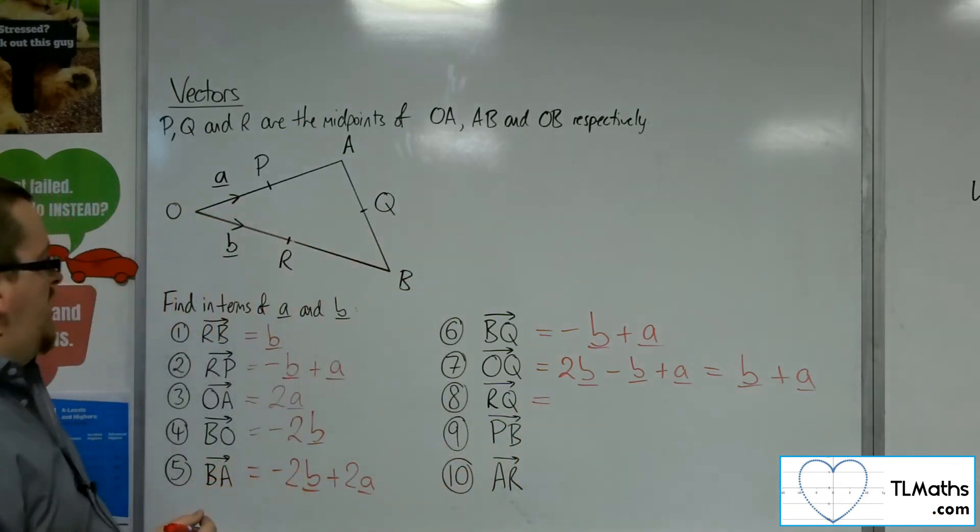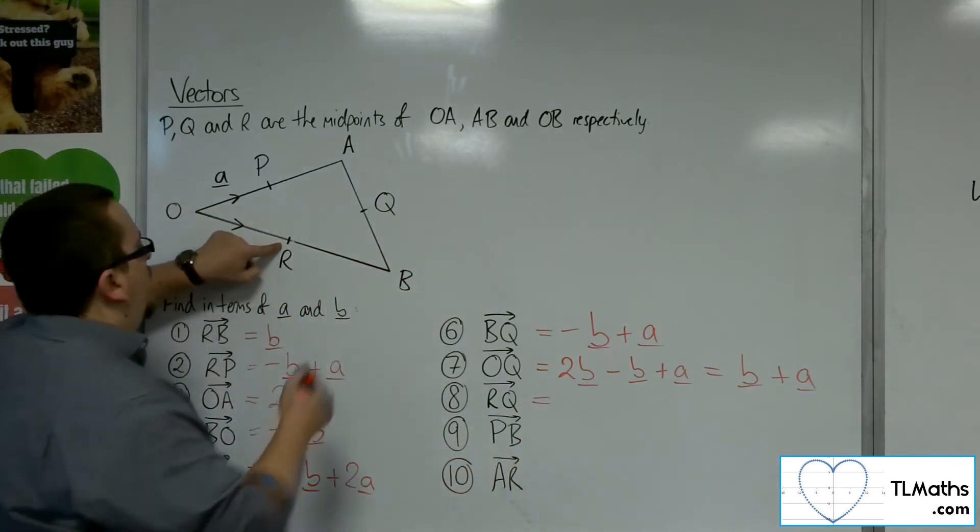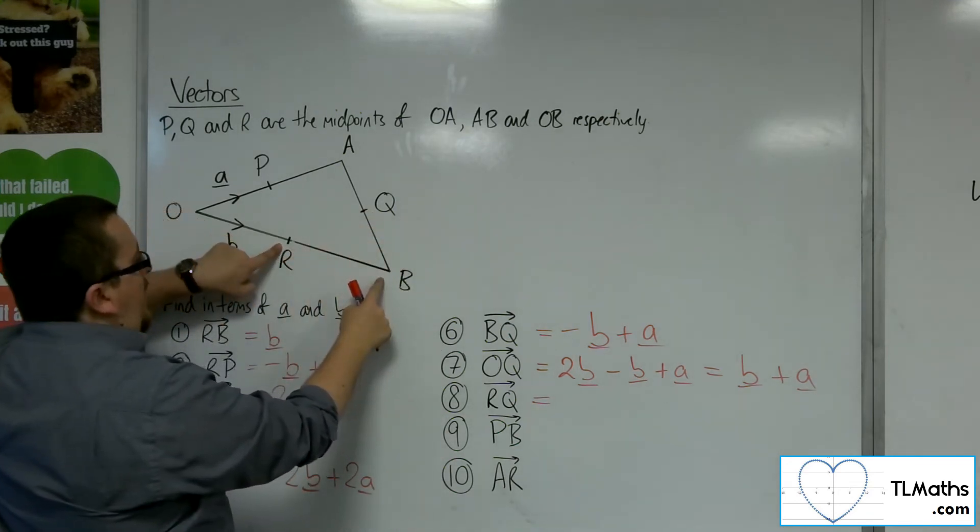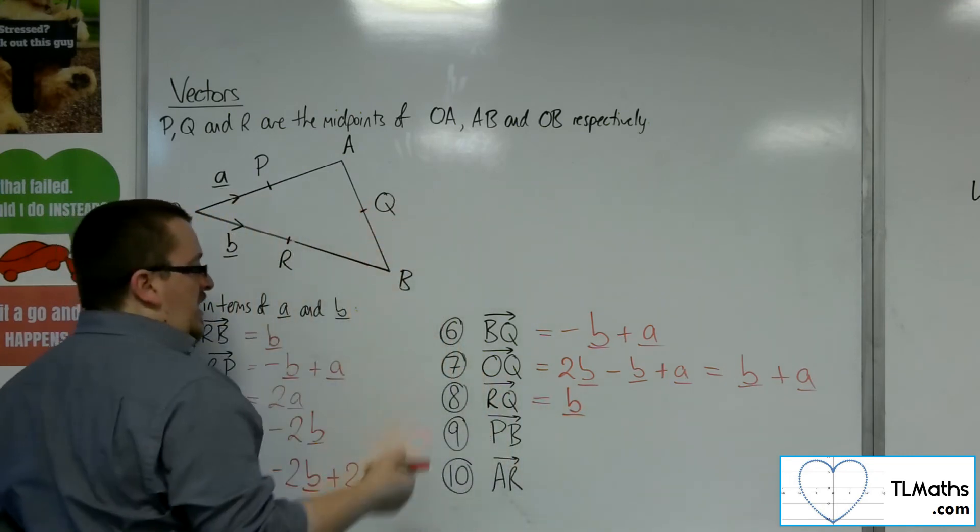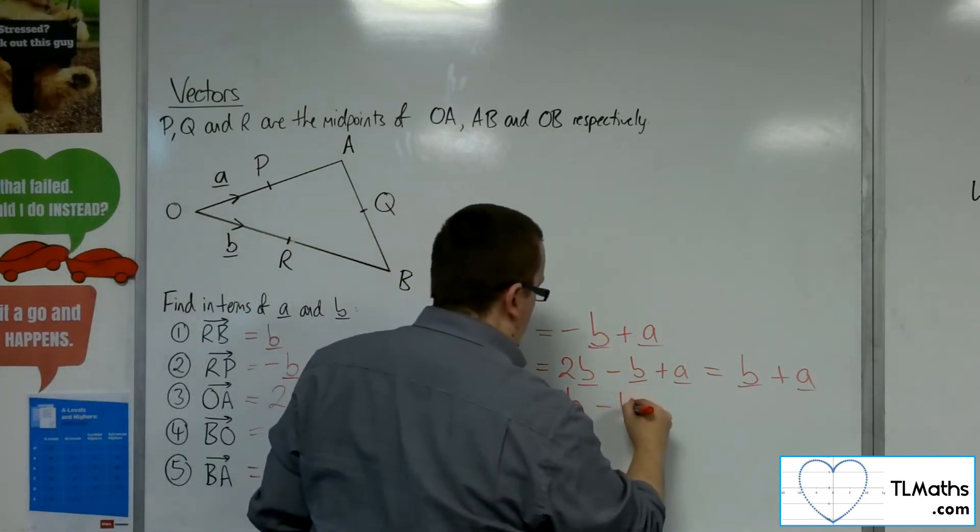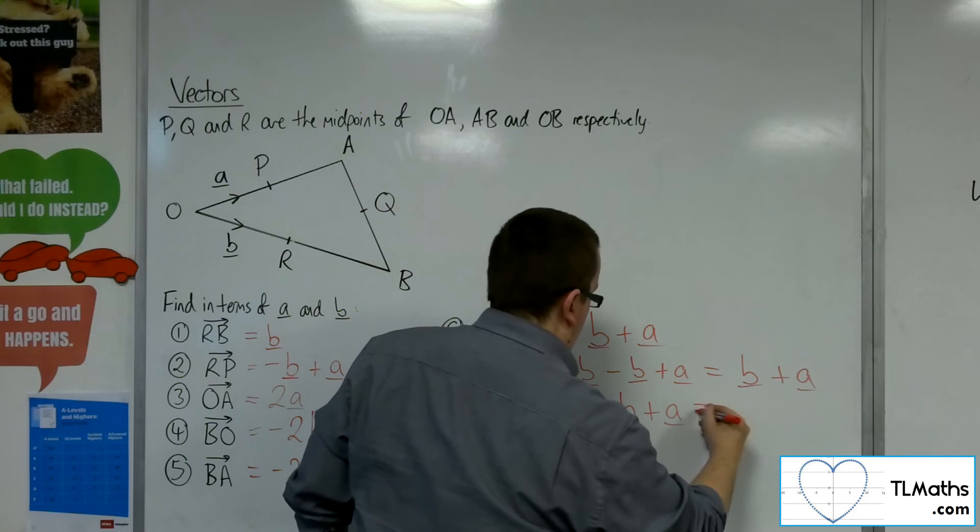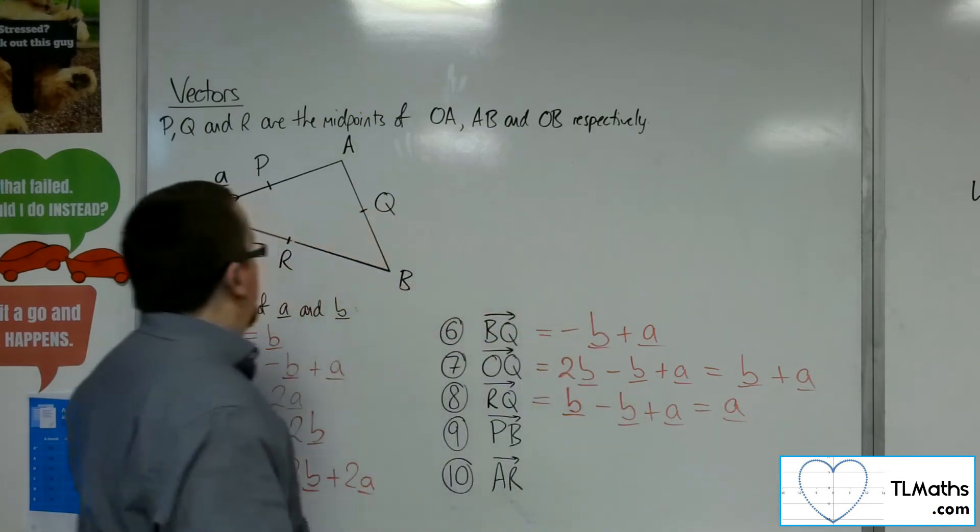How about R to Q? R to Q. Well, I've worked out R to B. That was B. And I know how to get from B to Q. That's minus B plus A. So that means it must just be A to get from R to Q.